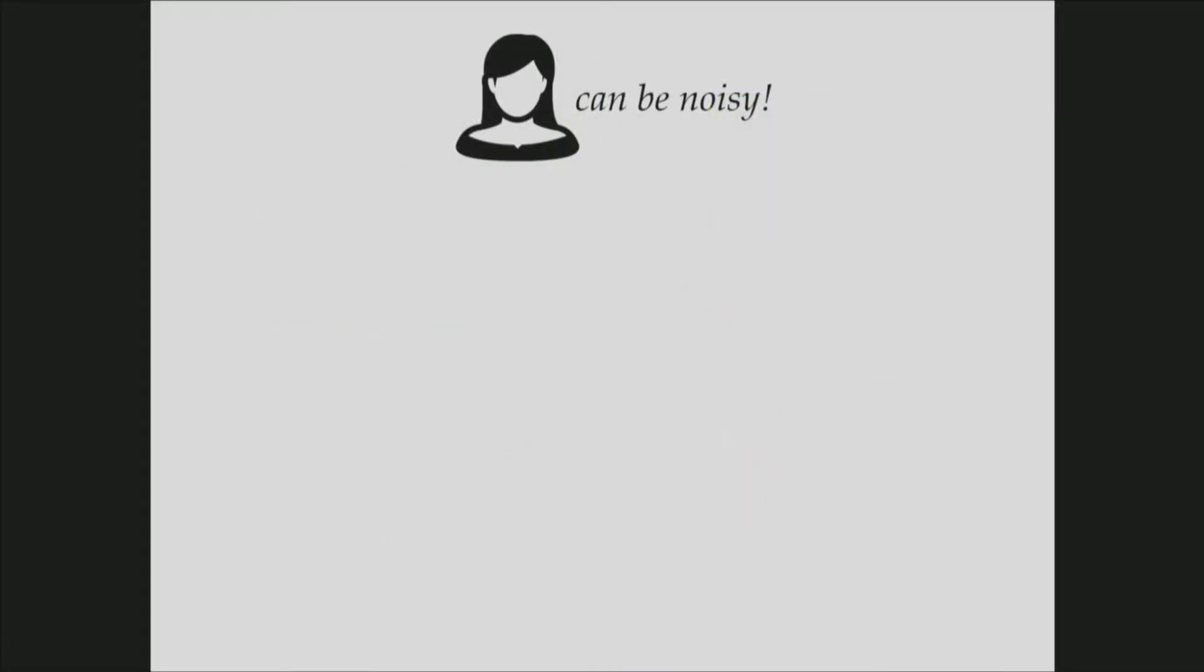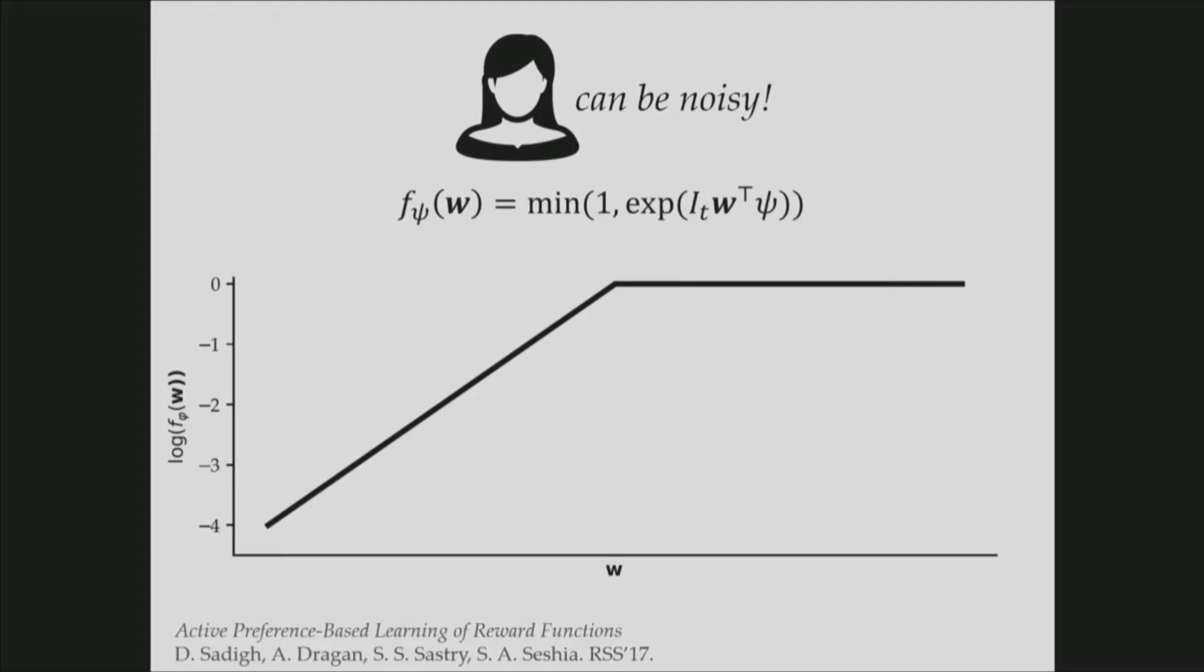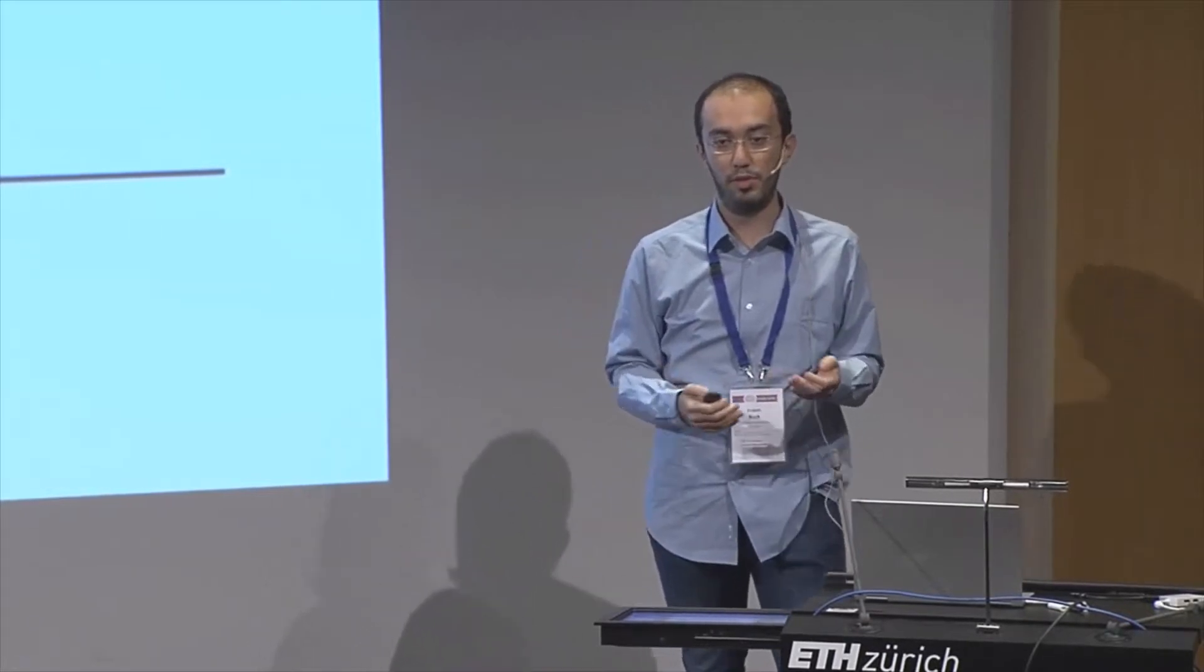So we can sample from this uniform unit ball using Metropolis Markov chain methods. And each query corresponds to a separating hyperplane in this space. But humans' responses can be noisy. And we are following the previous work here. And we are assuming this update function to model the human noise.